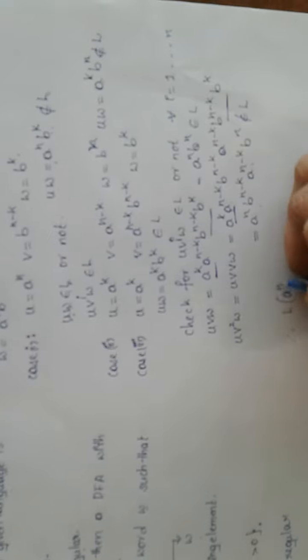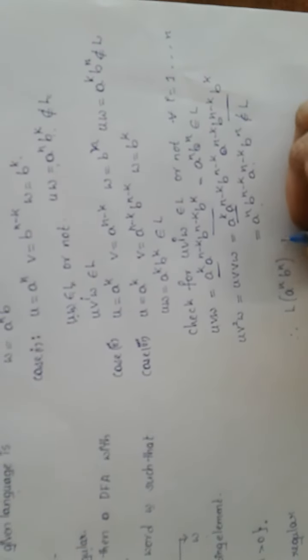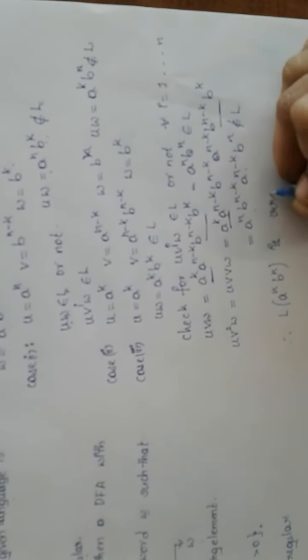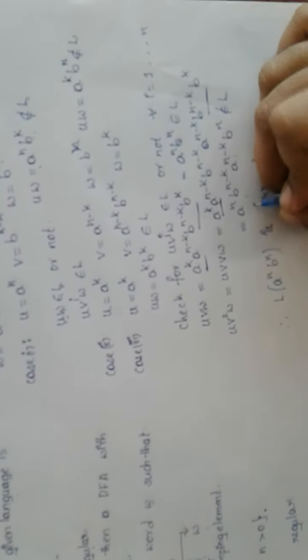We need not go for further powers of V. As this string does not belong to our language L, I can say that in all three cases I proved that the strings generated by the UW or UV^I W pattern do not belong to our language. So I can say that the language A^N B^N is irregular.